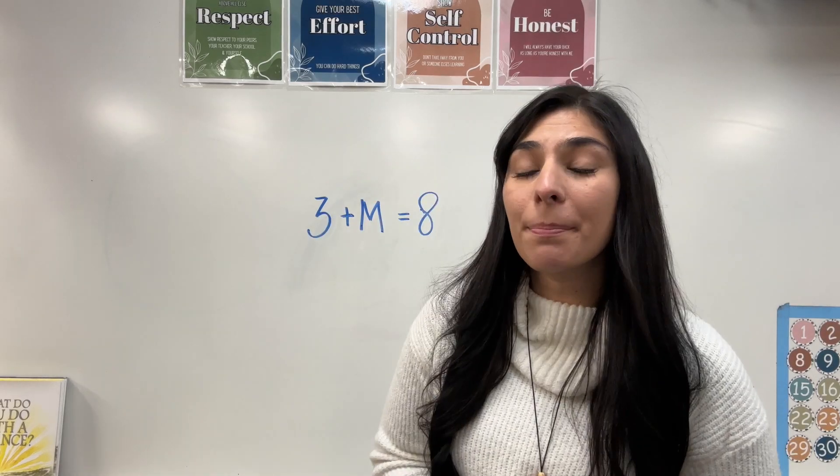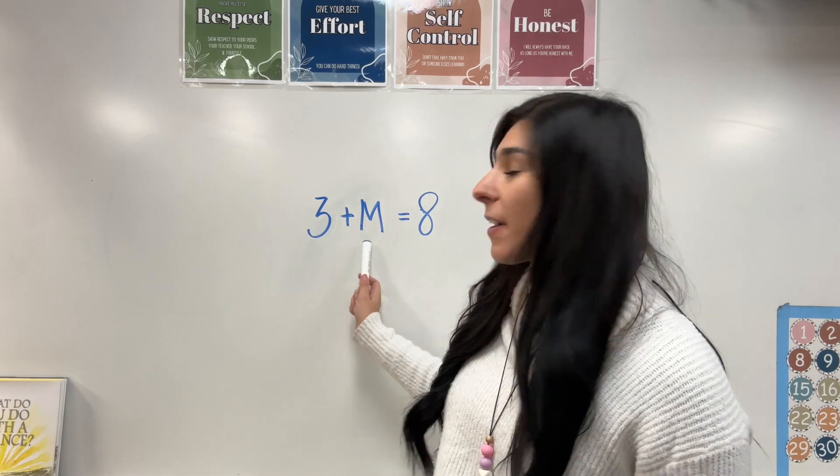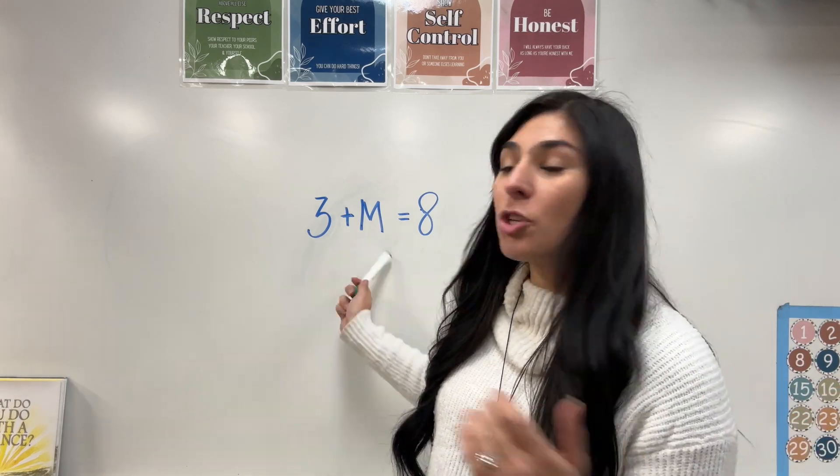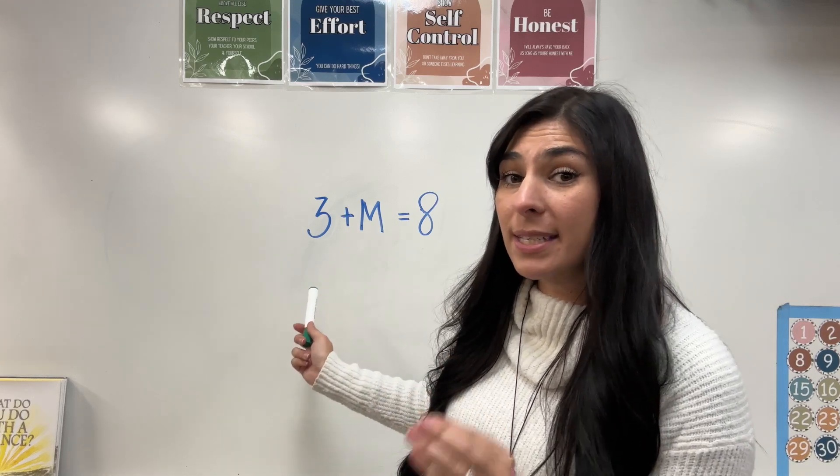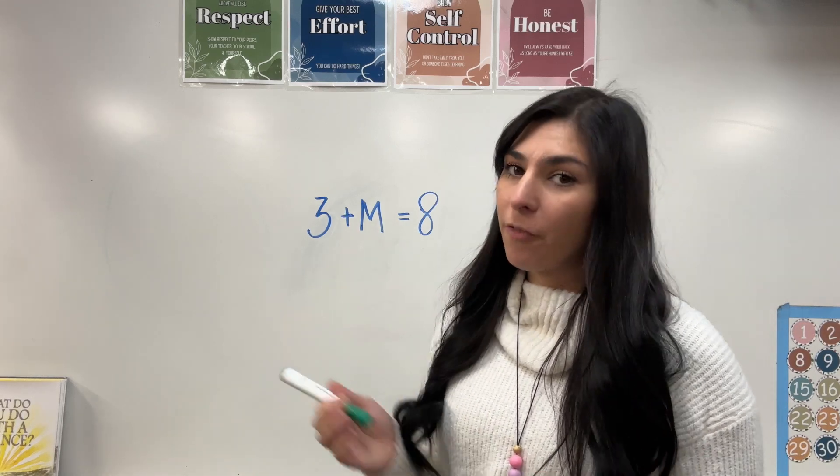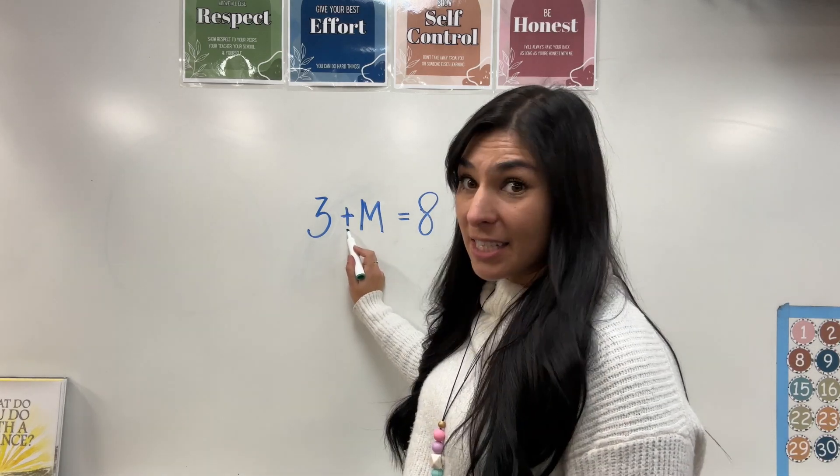So for this equation, I have three plus m equals eight. Remember this variable can be any letter. So we went with m. Remember this variable can be any letter and no matter where it's at in the equation, I want to get it by itself. So first, what's the operation? This operation is addition.